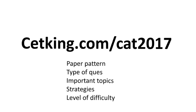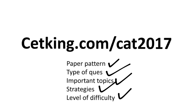First thing first — download the paper from cetking.com/CAD2017. You can download the PDF for the quant section, verbal section, and logic with solutions. The main agenda is the paper pattern — knowing what kind of questions are coming, type of questions, and important topics. Geometry is 8 questions, modern maths is again an important topic, and arithmetic is important. We can finalize our strategies for the exam based on this. This is a must-do for your CAT exam preparation.